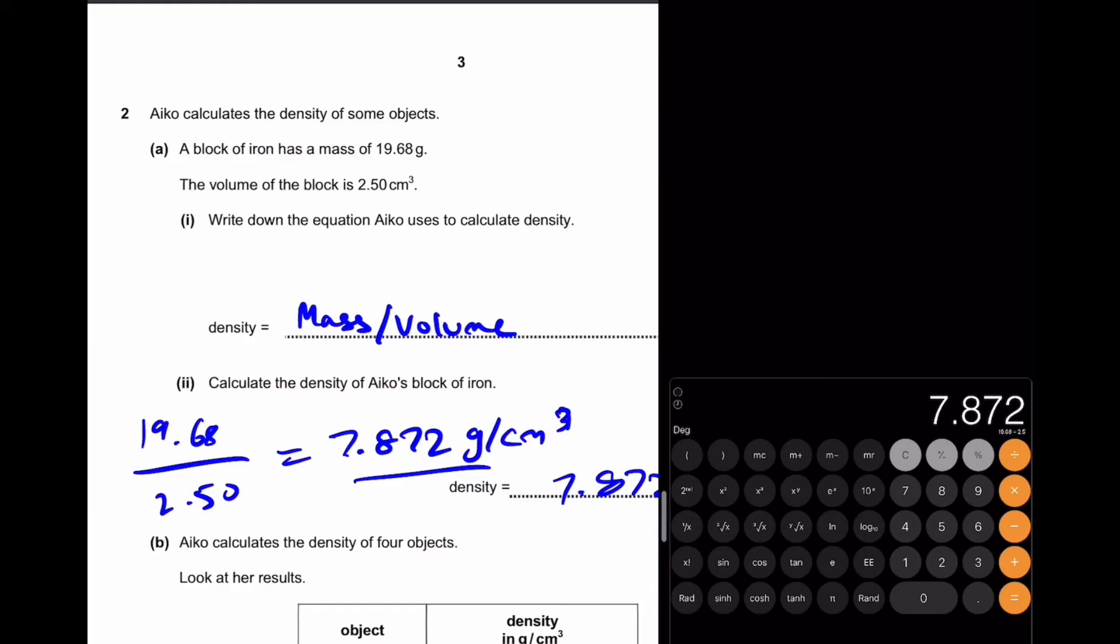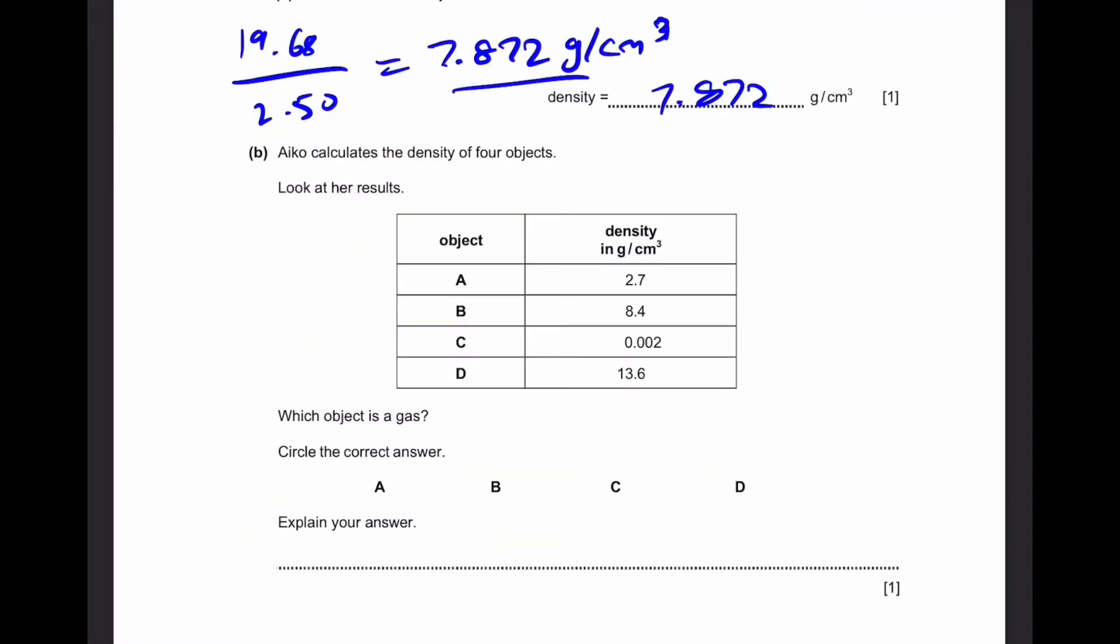Now let's go to part B. Ico calculates the density of four objects. Look at the results. Which object is a gas? Circle the correct answer and explain your answer. Well, we can see that gases always have a low density, extremely low. And in this case, C has an extremely low density, 0.002. Compared to the others, it's very low.